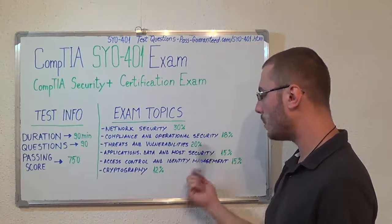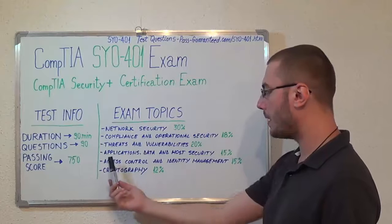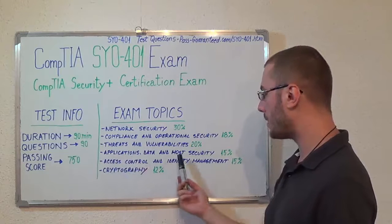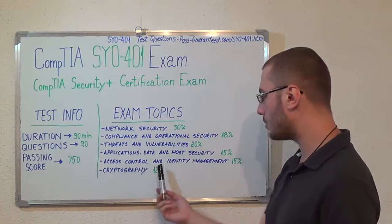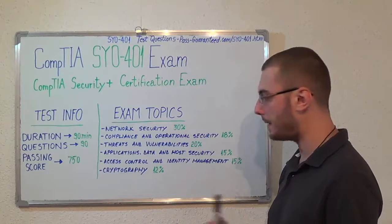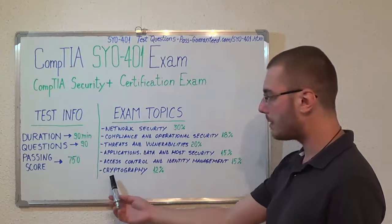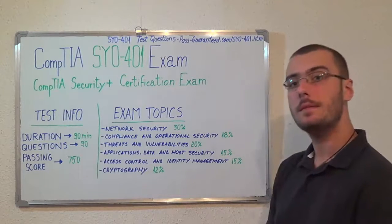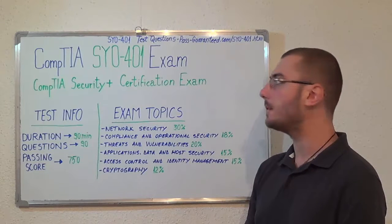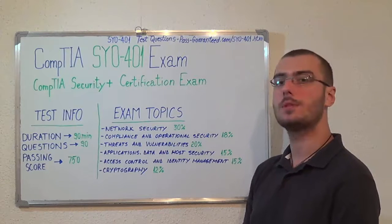Threats and Vulnerabilities with 20%. Next, Applications, Data and Host Security with 15%. Access Control and Identity Management with 15%. And the last, Cryptography with 12%. You can visit PassGuardia.com to successfully pass the SY0-401 exam.